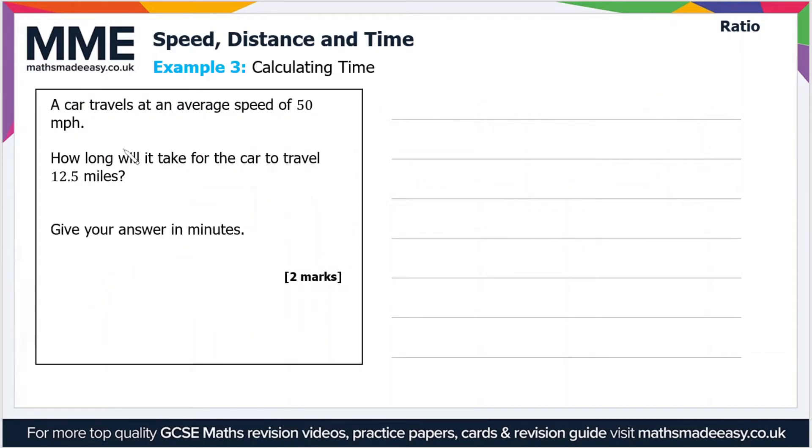So finally then, example three is calculating the time. So a car travels at an average speed of 50 miles an hour. How long will it take the car to travel 12.5 miles? Give your answer in minutes. Okay, so this is a bit more elaborate this question.